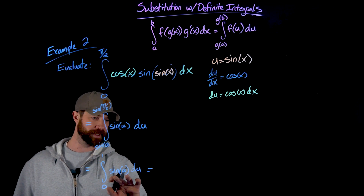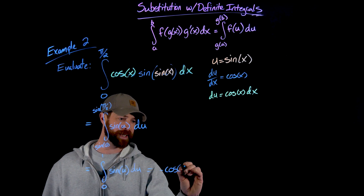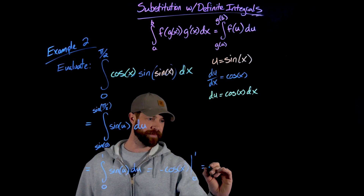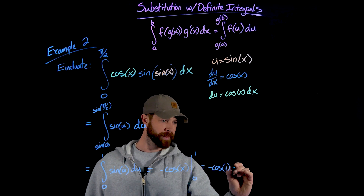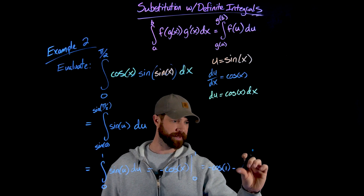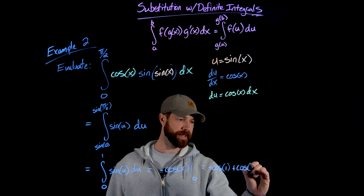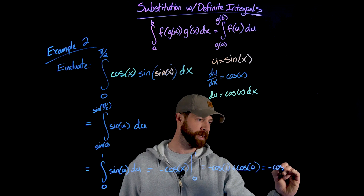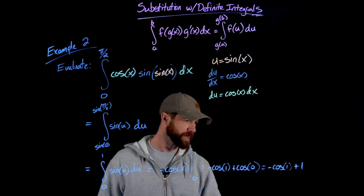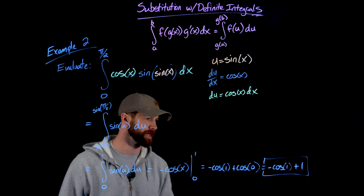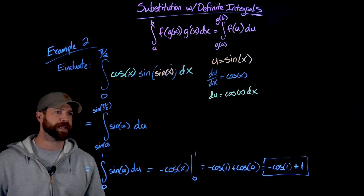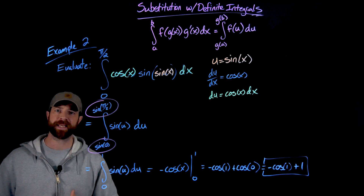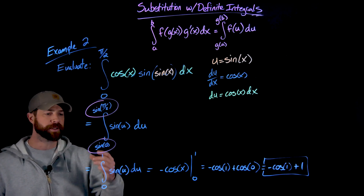Anti-differentiating sine of u gives negative cosine of u, evaluated from 0 to 1. Plugging in: negative cosine of 1 minus negative cosine of 0, which becomes negative cosine of 1 plus cosine of 0. Since cosine of 0 is 1, the result is negative cosine of 1 plus 1. This is the exact solution. The important point from this video is simply this adjustment — when you change to du, you must also translate the bounds.